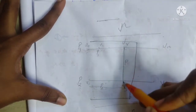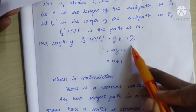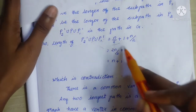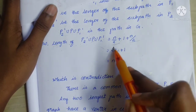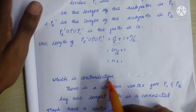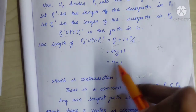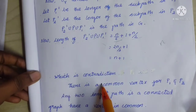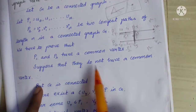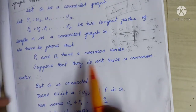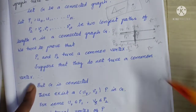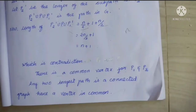So the total length is n/2 plus the length of P plus n/2. Since P has no internal vertices in P1 or P2, its length is at least 1. So the total length is n/2 plus 1 plus n/2, which equals n plus 1. This is a contradiction, because P1 and P2 were assumed to be longest paths of length n, but we constructed a path of length n plus 1. So there must be a common vertex for P1 and P2. We supposed they do not have a common vertex, but we derived a contradiction. Therefore, any two longest paths in a connected graph have a vertex in common.